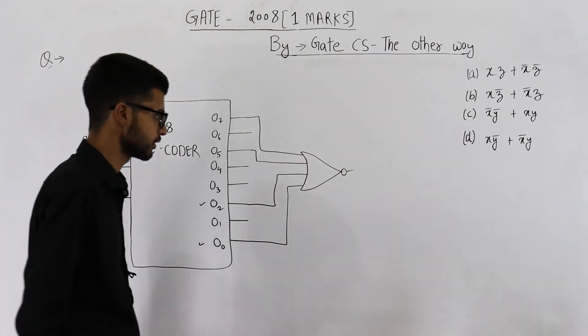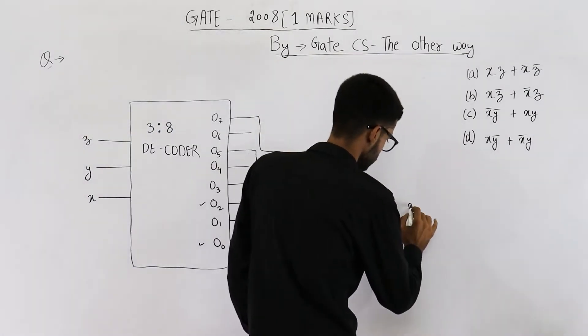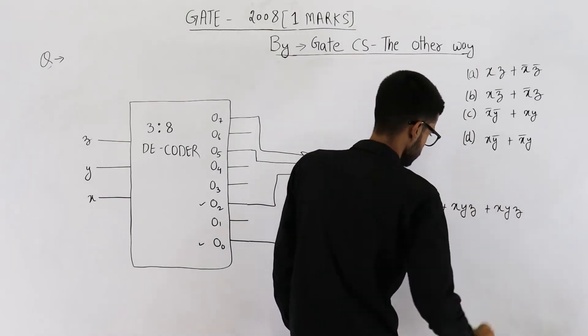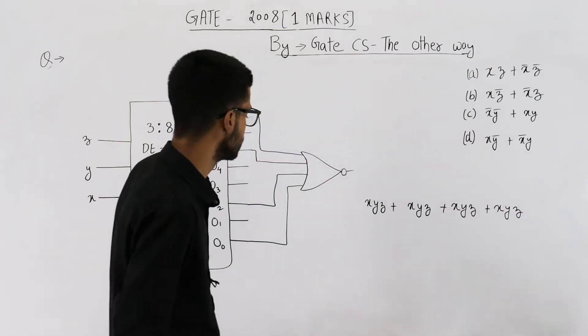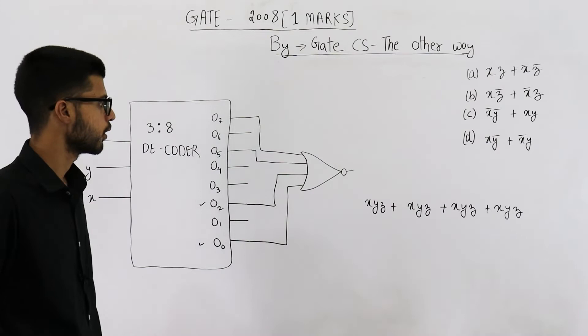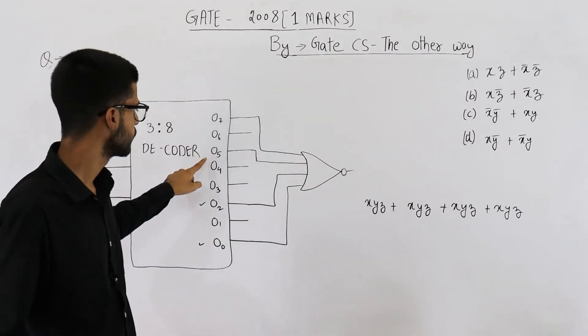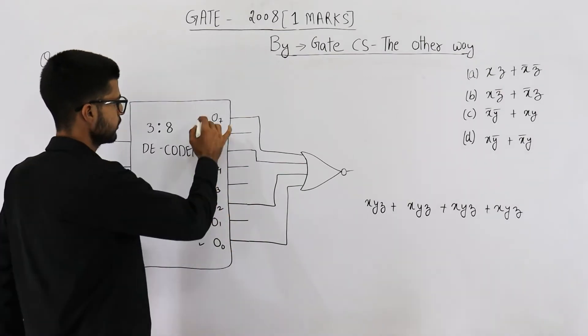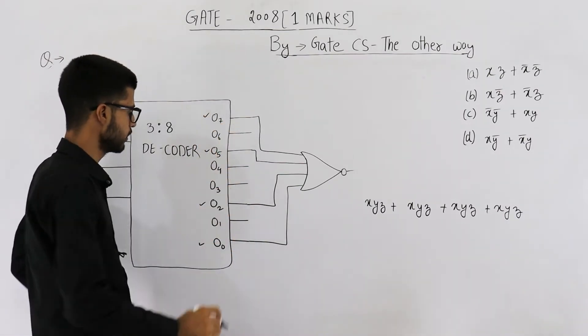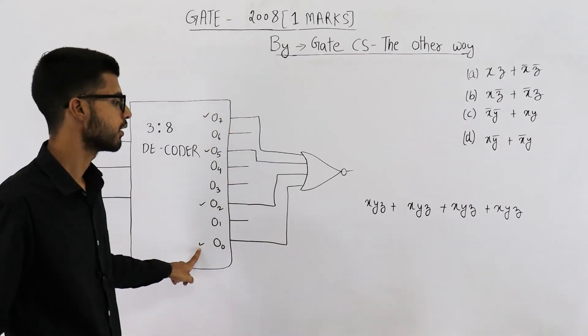So let us write an equation. I am trying to perform NOR of these four values: O7, O5, O2, and O0.